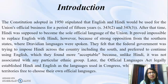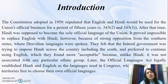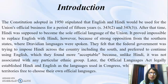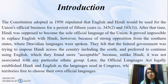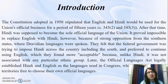The Constitution was adopted in 1950 and stipulated that English and Hindi would be used for the Union's official business for a period of 15 years. After that, Hindi was supposed to become the sole official language of the Union. However, it proved impossible to replace English because of strong opposition from the southern states where Dravidian languages were spoken. They argued that the federal government was trying to impose Hindi across the country and preferred to continue using English, which was not associated with any particular ethnic group.